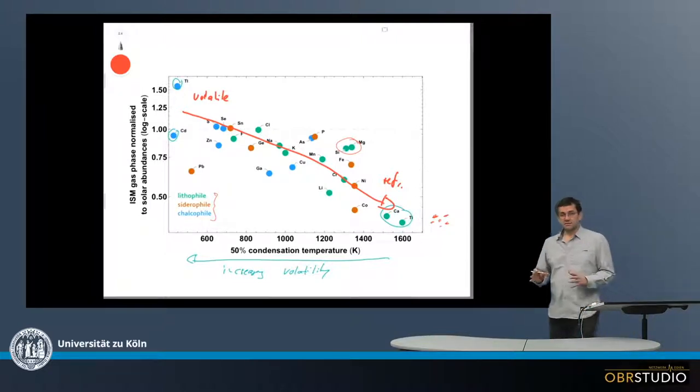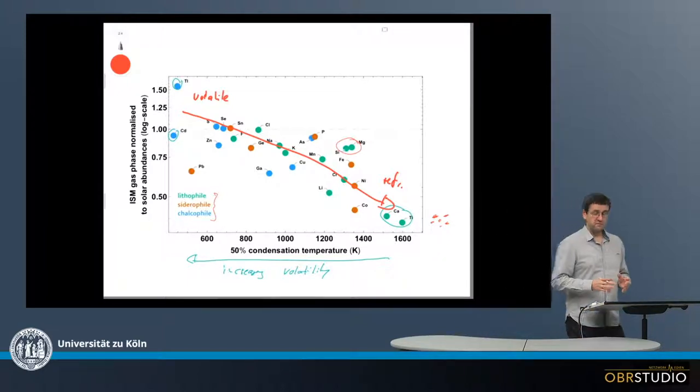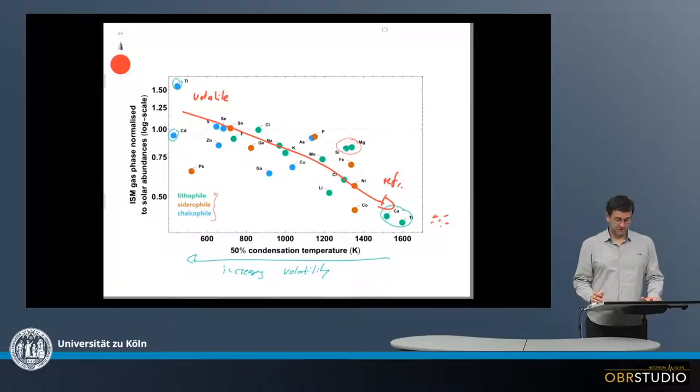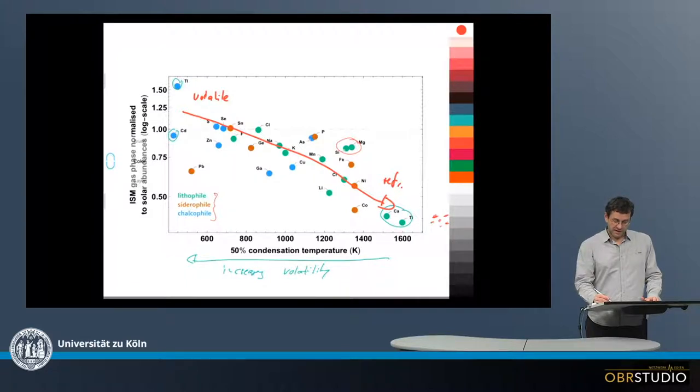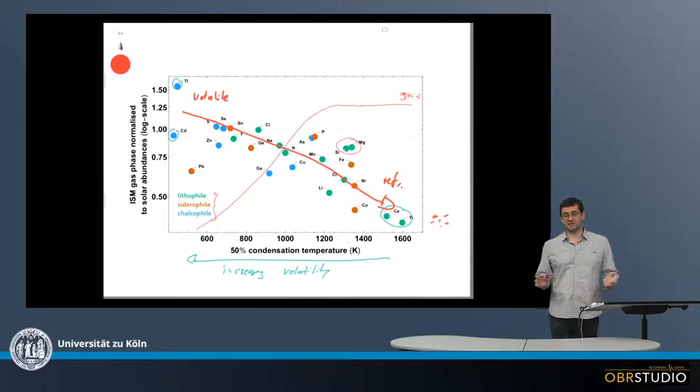Now, if we look at the grain, what kind of composition might these grains have? Well, apparently, these grains should be enriched in refractory elements. So these are the grains here. And these are enriched in refractory elements. Then towards more volatile elements, they become more and more depleted, and the pattern looks something like this.